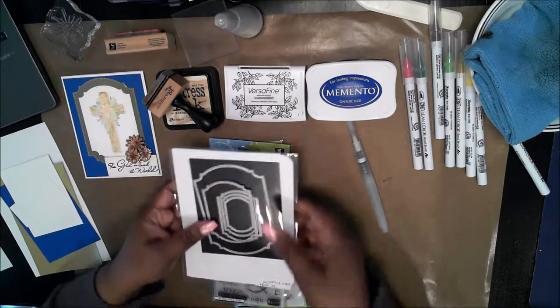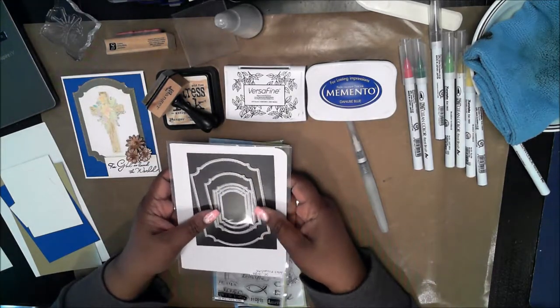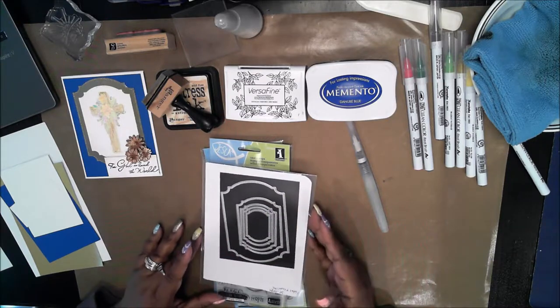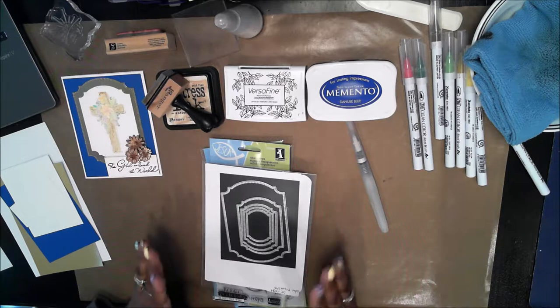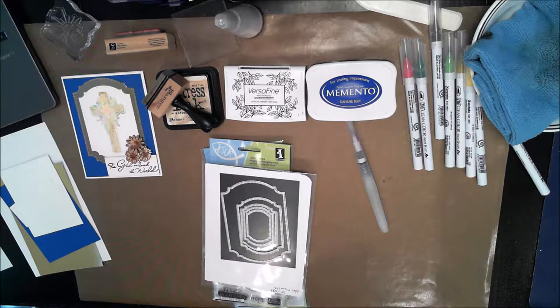I'm also using die cuts. This is a no name brand that I got from Amazon and this is called labels which is very similar to Stampin' Up and Spellbinders labels die cut so if you had a similar shaped die cut that would be just fine. You don't have to get this one.